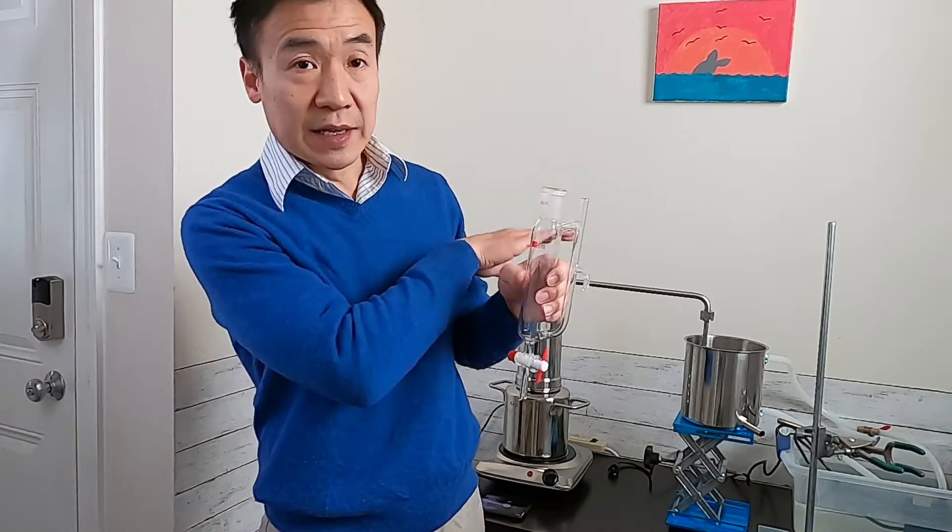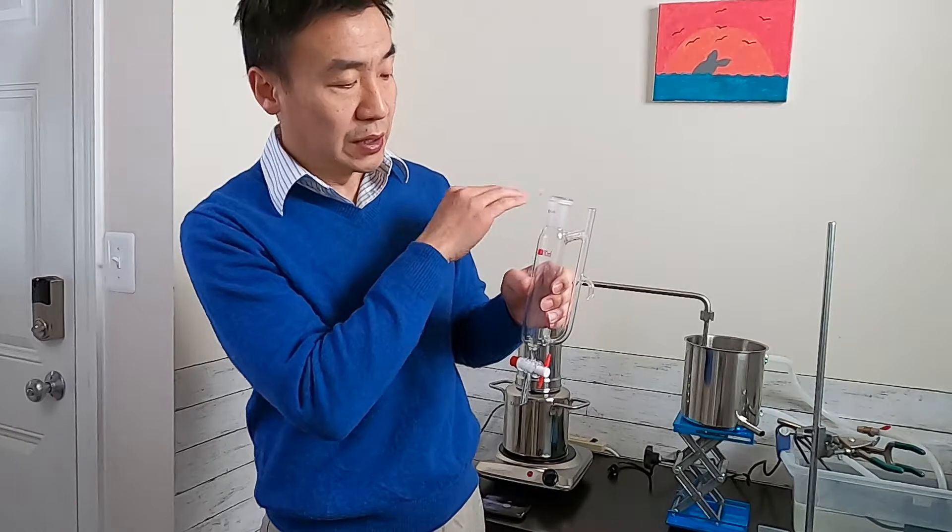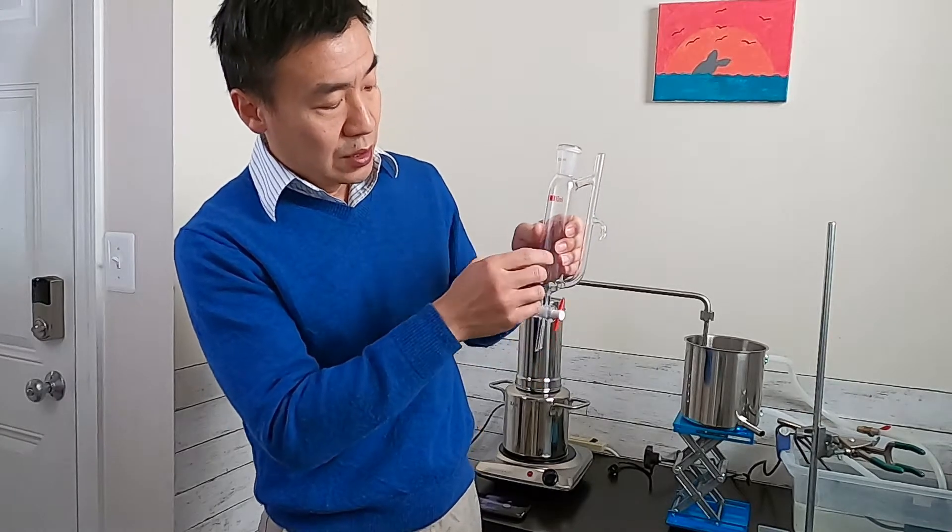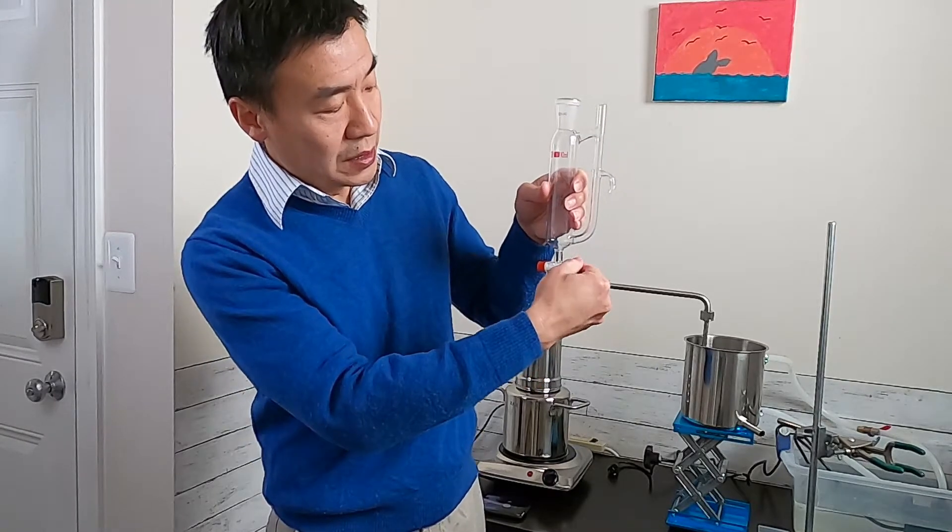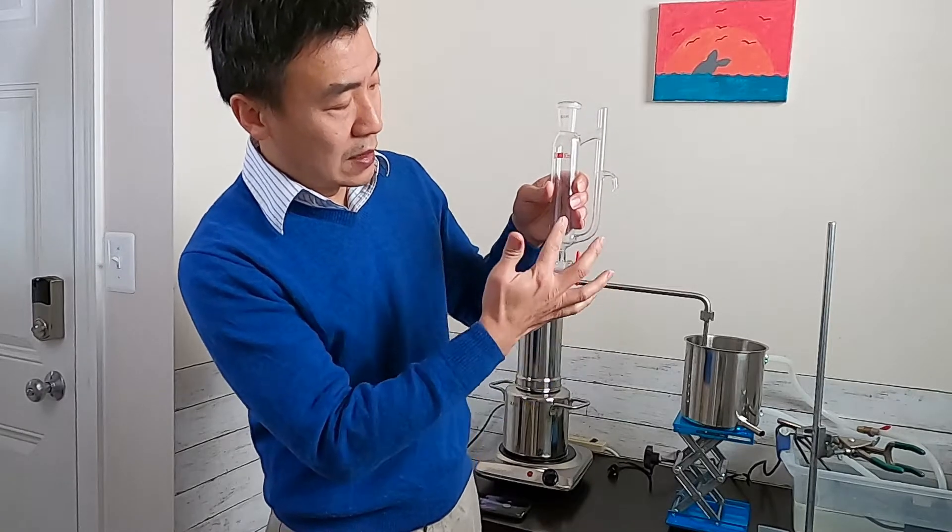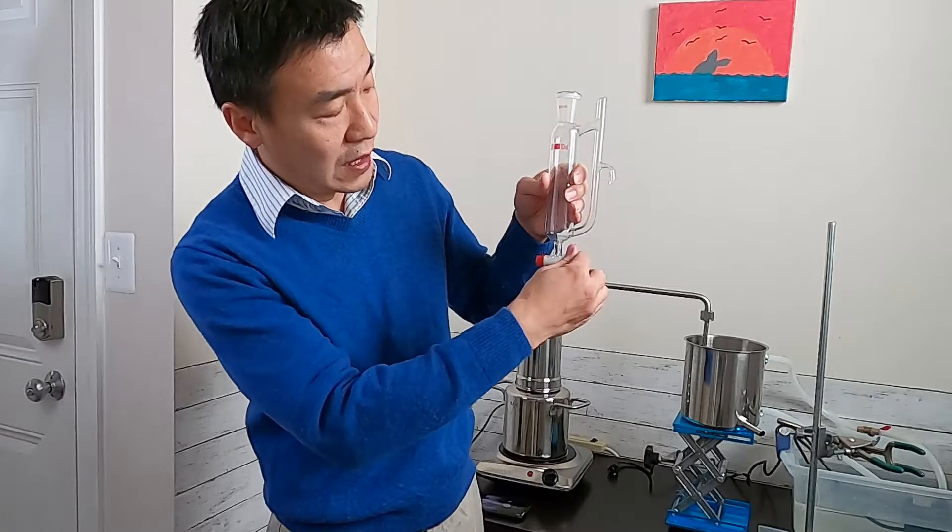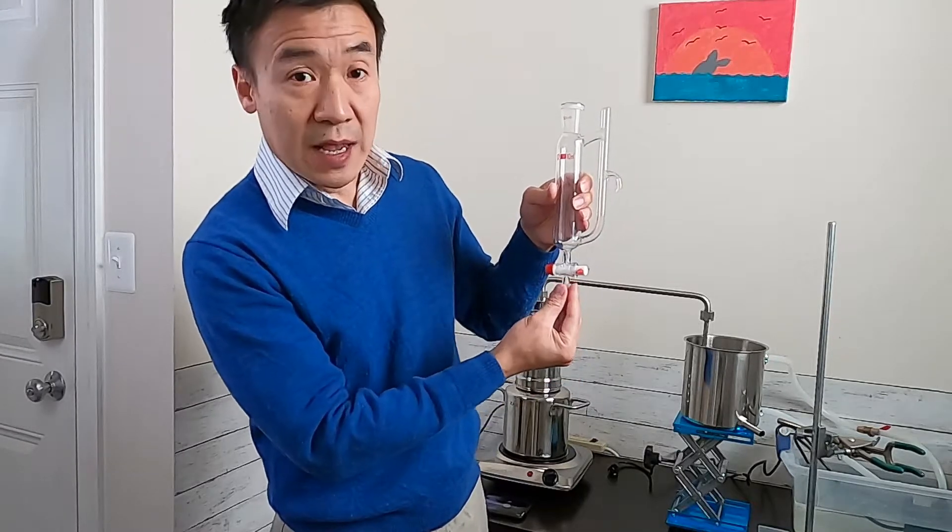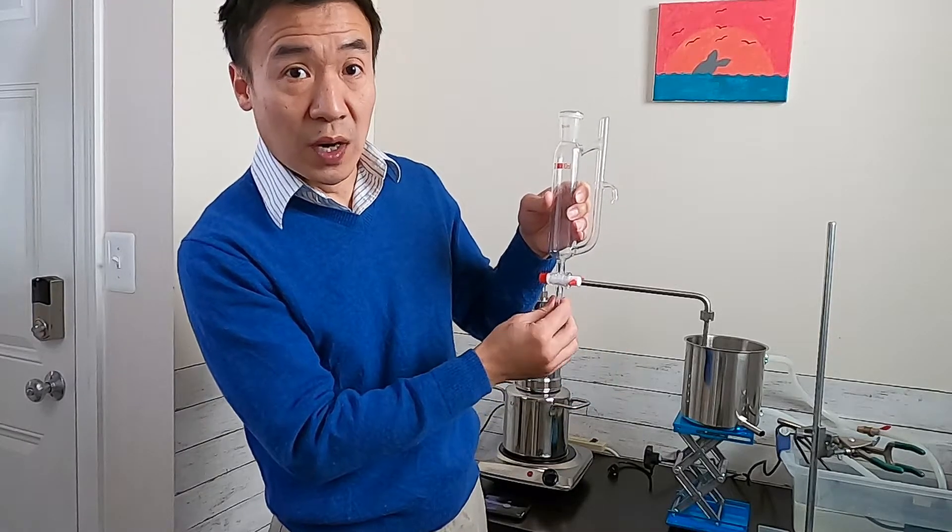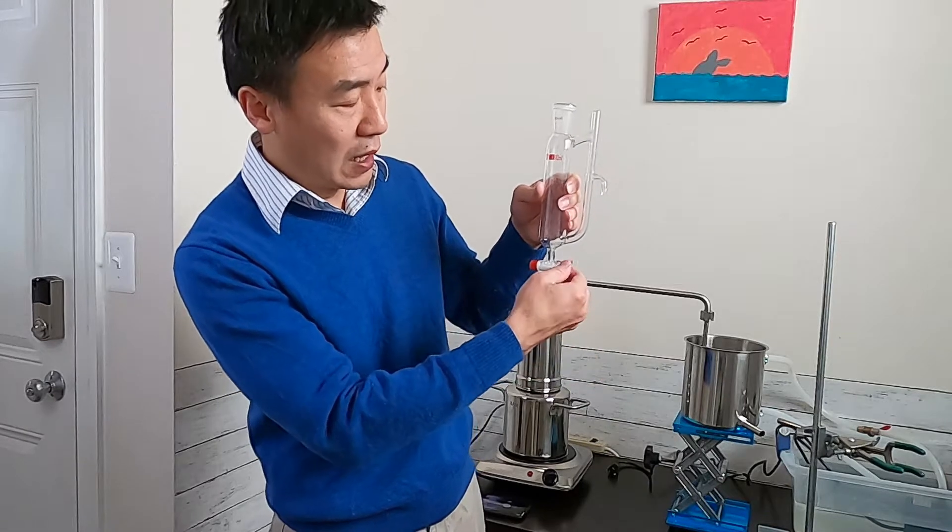When you finish, you take the tubing out. And then you just drain from here. You open it and drain until the oil gets to the valve. Then you close it and you switch into an oil bottle. Then you collect the oil.